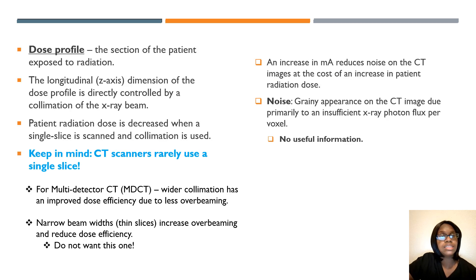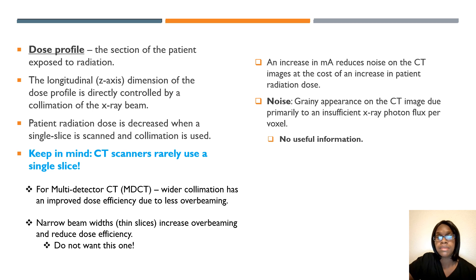Keep in mind your dose profile, which is the section of the patient that is going to be exposed to radiation. CT scanners rarely use a single slice. Noise makes the image grainy — it is information that is not useful for the CT image. Increasing MA to reduce noise on CT images will increase patient dose, so while images may look less grainy, the patient will receive a higher radiation dose.